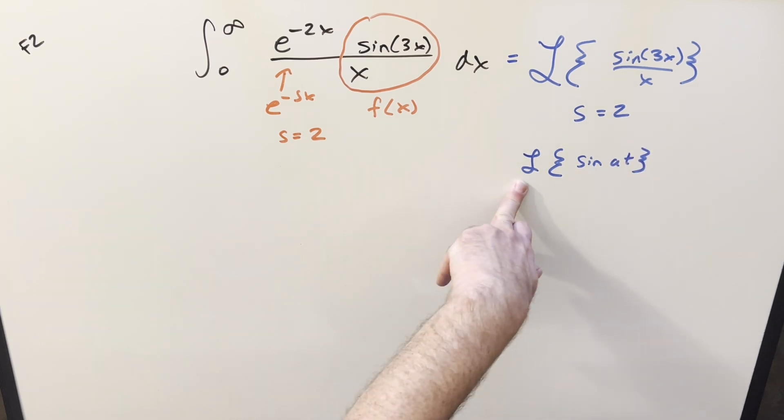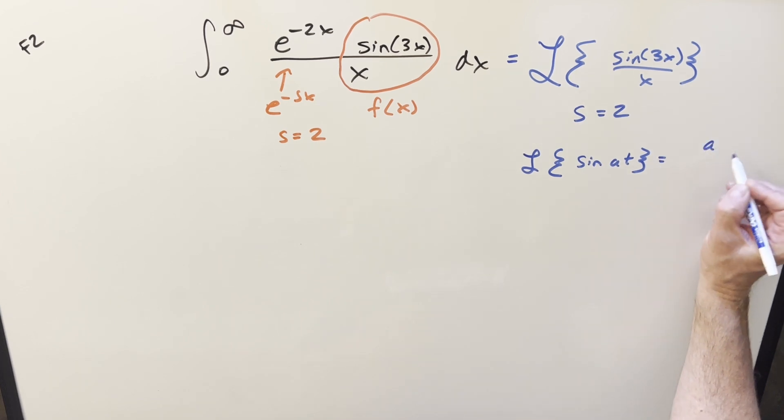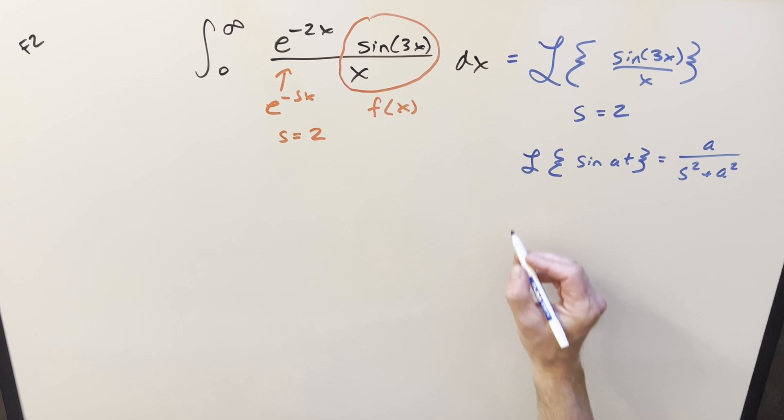So our formula for the Laplace of sine a t is just going to become, it's just going to be a over s squared plus a squared. And the other formula we're going to need for this is a little more complicated.